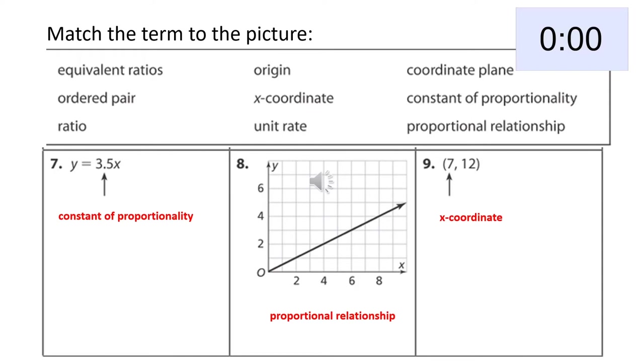Moving on to number seven, 3.5 represents the constant of proportionality in the linear equation y equals 3.5x. One way to look at this is if you divide both sides of the equation by x, you would get y over x is equal to 3.5 over 1, which looks like our unit rate. For number eight, the graph represents a proportional relationship, because it is a straight line going through the origin. And number nine, the first coordinate of an ordered pair is always the x-coordinate.